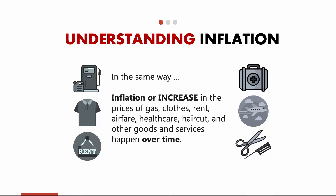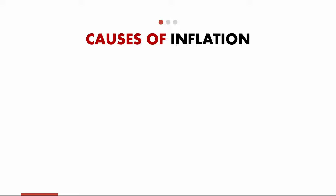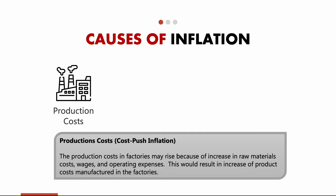So what could be the causes of inflation? Let's go over several direct and indirect causes. The first is production costs. Production factories can see an increase in raw material prices, which causes the producer to raise their price. For example, if the pizza cheese vendor raises the cheese price, then the pizza price would also increase. This is also called cost-push inflation.